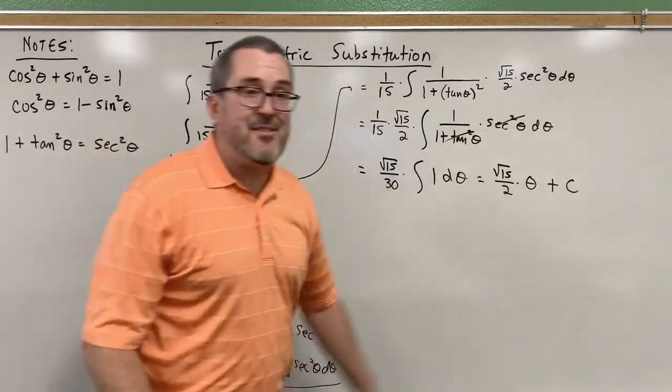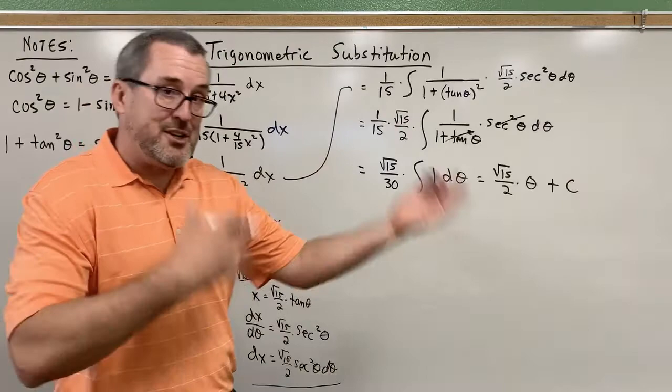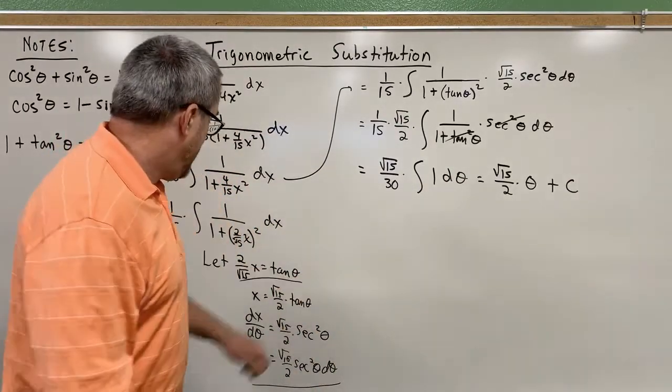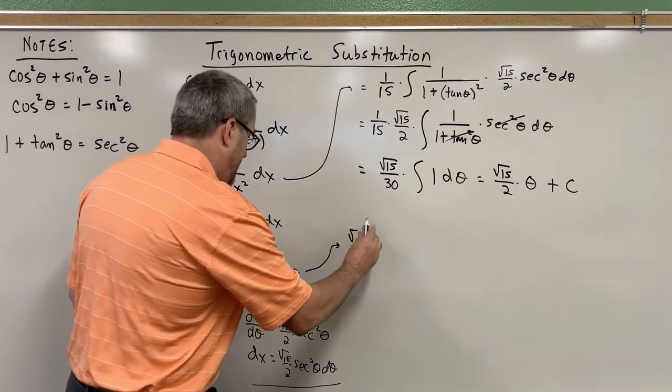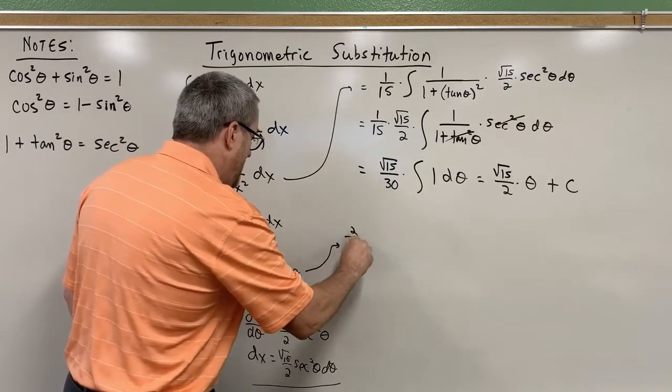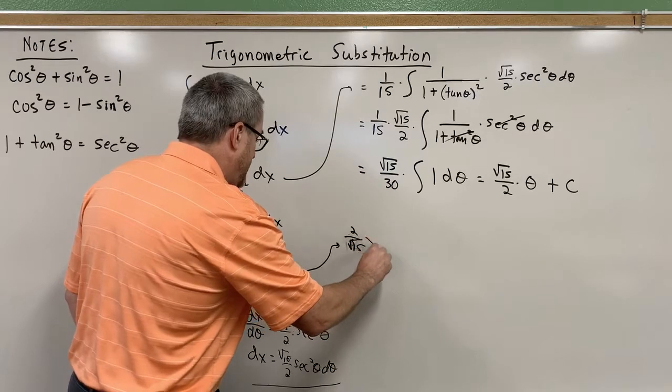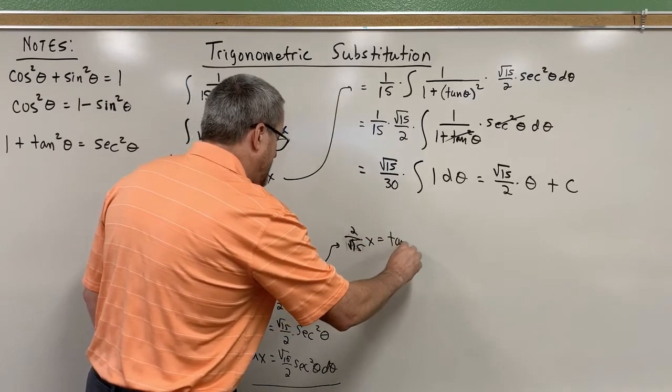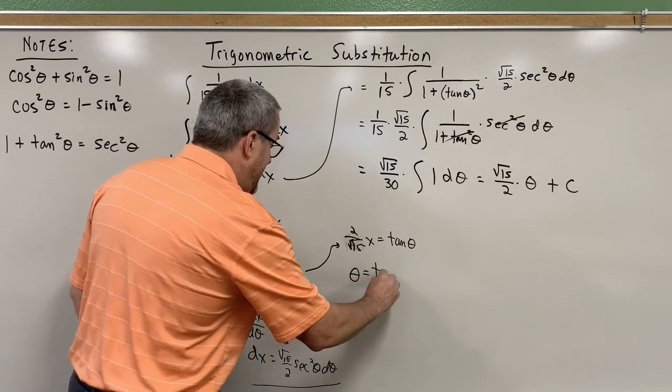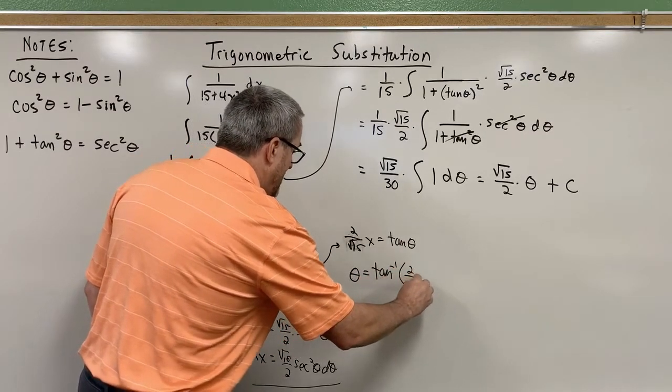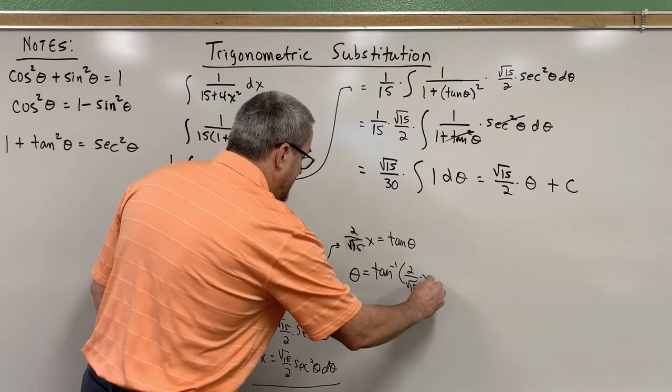But again, we don't leave our answers in terms of theta. We want to transform them to be back in terms of x. So we come back to our claim. Our claim here was this 2 over the square root of 15 times x was equal to the tangent of theta. Therefore, theta is the inverse tangent of 2 over the square root of 15 times x.